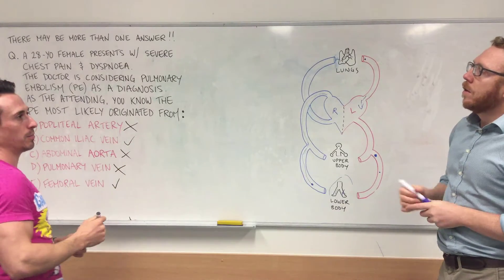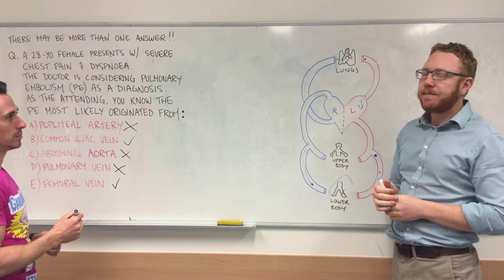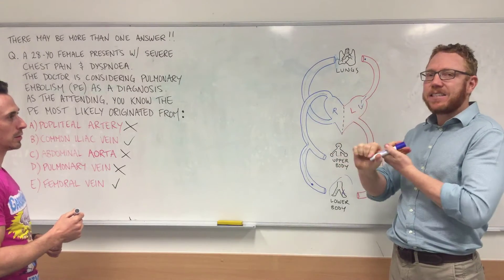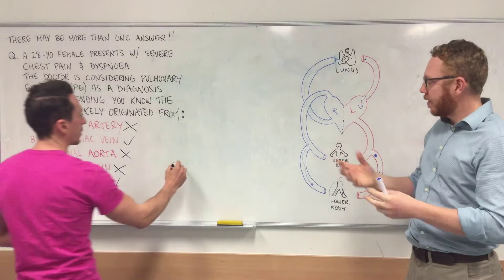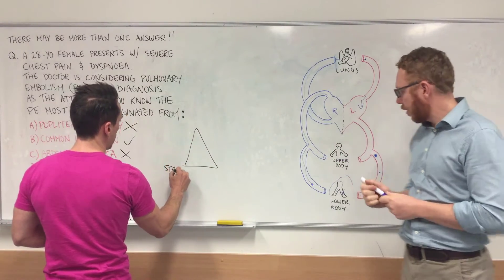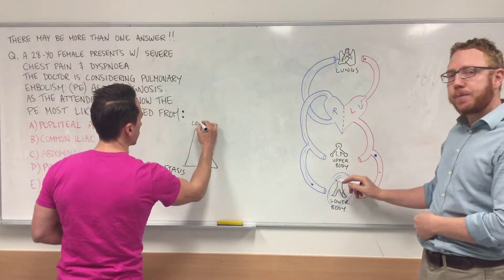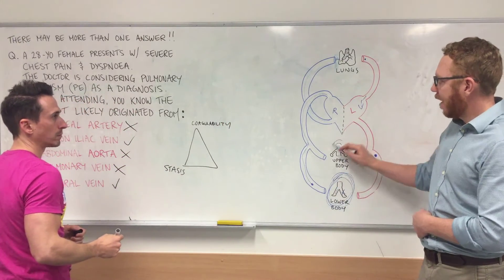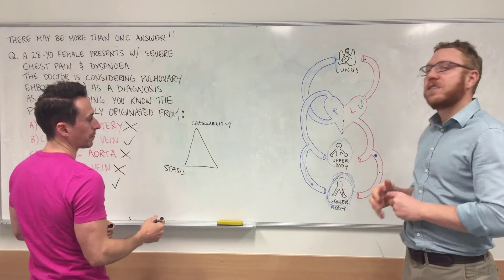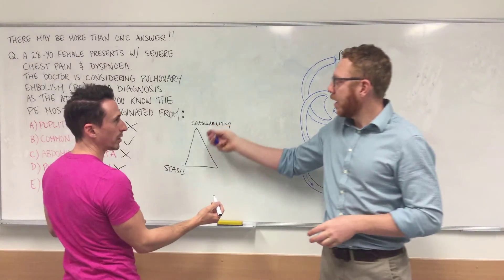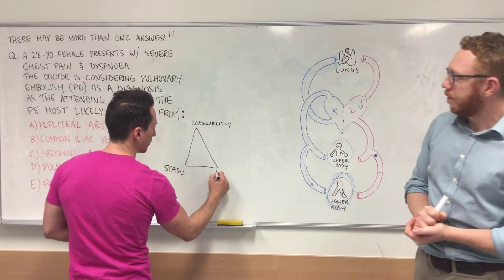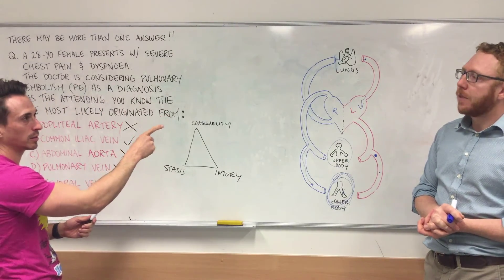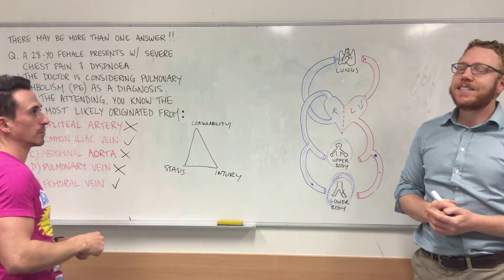Is there one that's more likely than another? When we think of a PE, it always starts from a DVT — a deep vein thrombosis — usually caused by three things: stasis, coagulability, and vessel injury. This is Virchow's triad. The most common location for stasis is your lower body because it's against gravity. About 70% of DVTs that throw off a clot for a PE come from your lower body, and about 5% from the upper body. Increase any of those three factors and you're likely to get a DVT, and if it breaks off, it could go to your lungs and cause a PE.